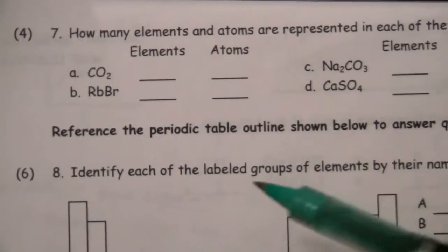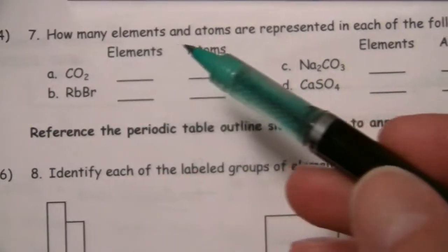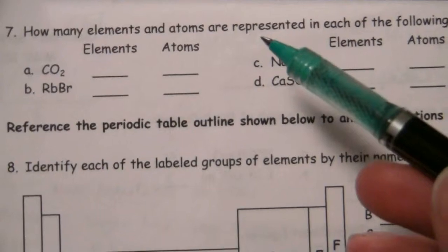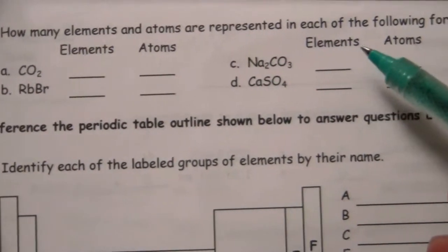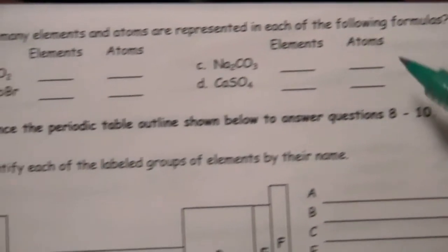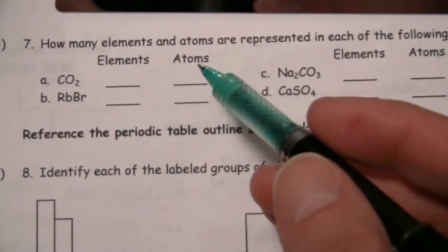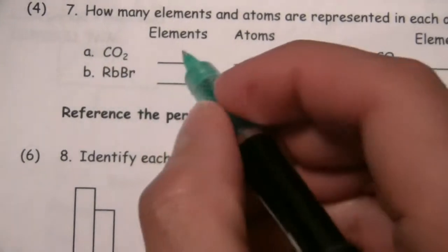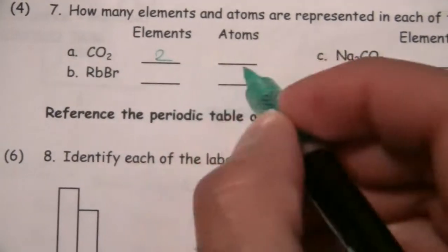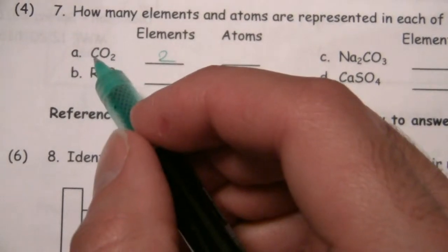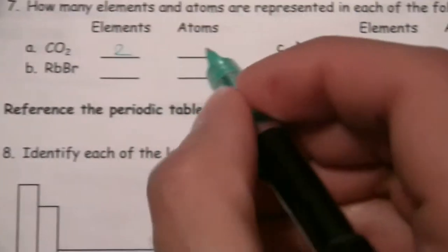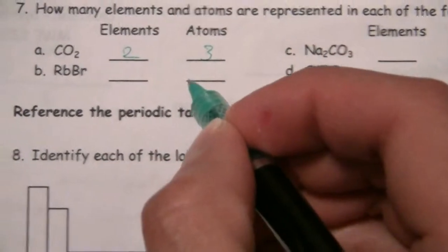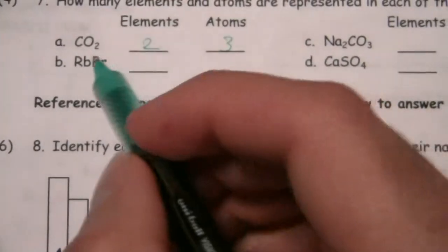Now here we are asking how many elements and atoms are represented in each of the following formulas. How many elements and atoms? So elements, we have carbon and oxygen, so that is two. The atoms, there's one carbon and two oxygen, so that's three. Nothing fancy here.